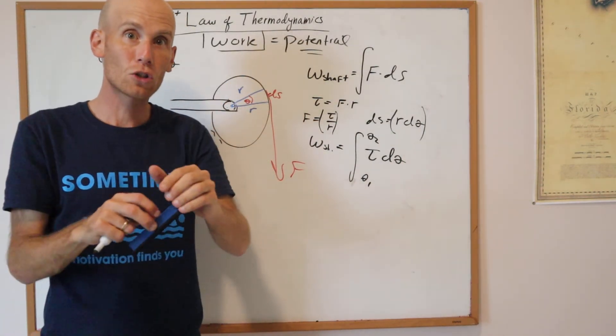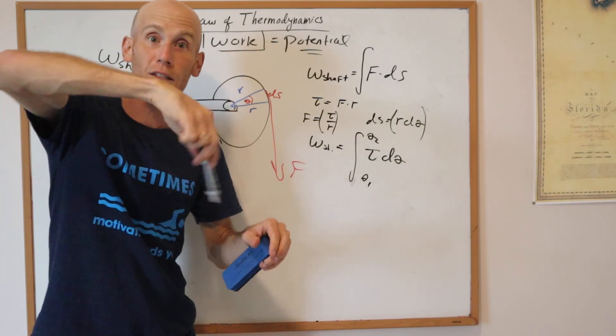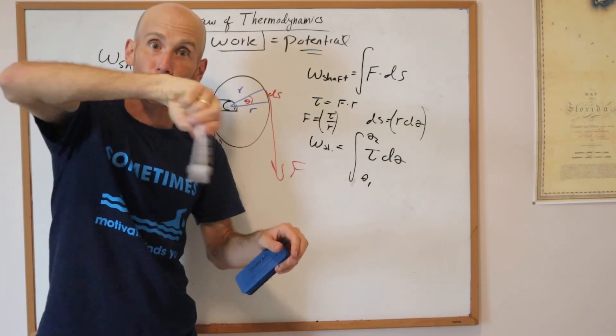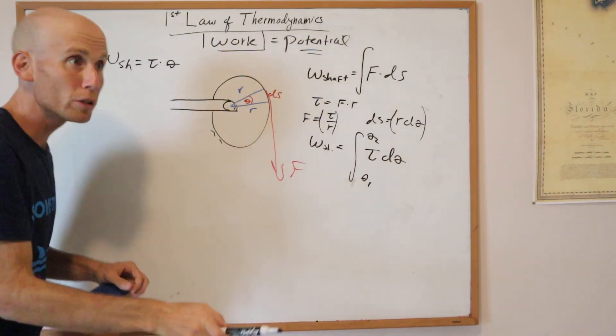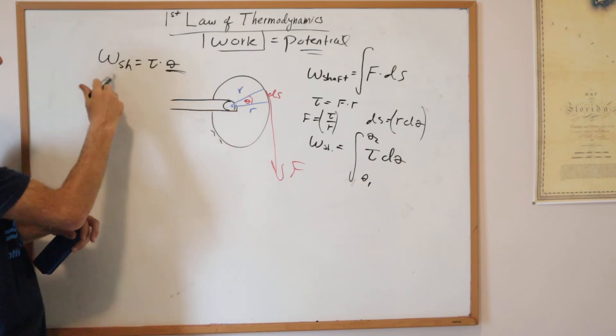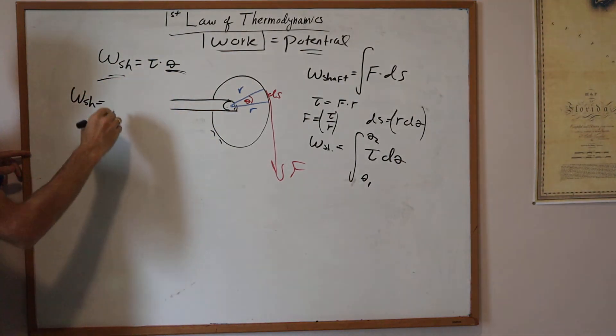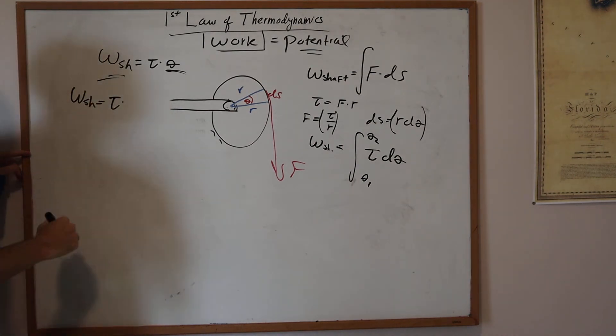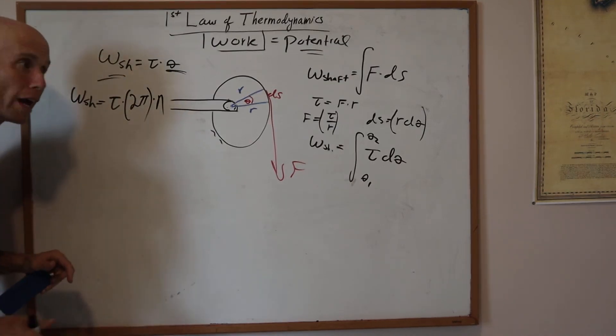Gears usually revolve quite a bit, or if I have a steering element like a stir stick, it's revolving around a circle. So I can count how many circles I'm doing, and from that alone I can get the shaft work. The shaft work ends up being tau times 2 pi times the number of revolutions.